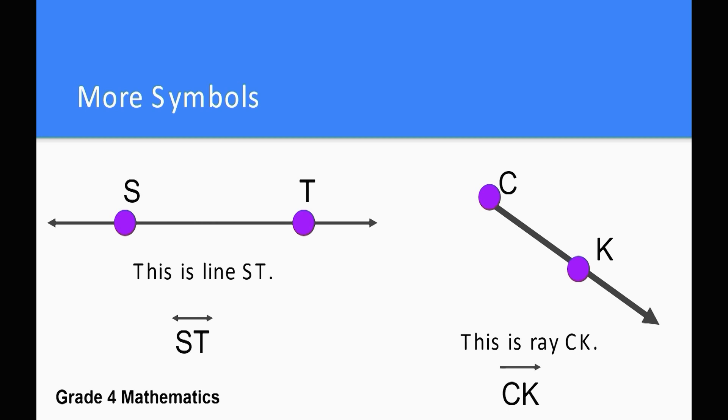We use the same method to name lines and rays. Lines are named with any two points on the line. Rays are named with the end point and one other point on the ray. To show a line, we write the two letters on the line and draw a small line with arrows on each end above it. Like this. For a ray, we write the points that name the ray and draw a small ray on the top of the letters. Like this.